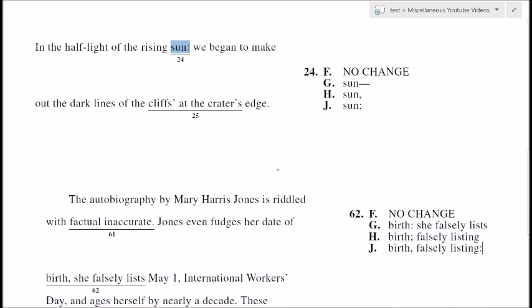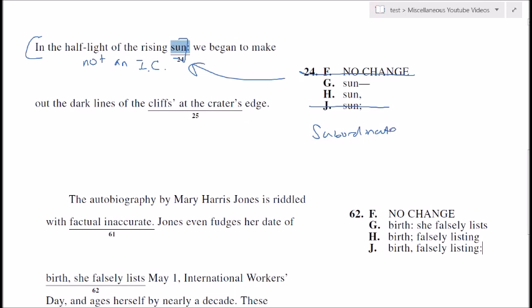From the 2016-17 practice test: 'In the half-light of the rising sun, we began to make out the dark lines of the cliffs at the crater's edge.' Looking at question 24, the part before the proposed colon is not an independent clause, so right away we know it can't be a colon — and it can't be a semicolon, which needs two independent clauses. Just like the last example, we have a subordinate clause followed by an independent clause, so we simply use a comma. The key is that you can't use a colon here — this is not an independent clause, nor is this a clarification, so it strikes out on both counts.